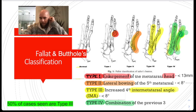Type 1 is enlargement of the metatarsal head, and normal metatarsal head width is less than 13 millimeters, so greater than 13 millimeters would be abnormal. Remember that because 13 is an unlucky number, and you don't want any association with your butthole.